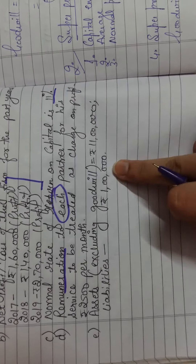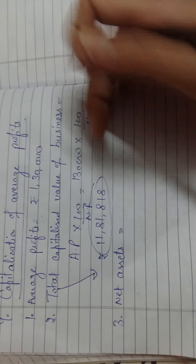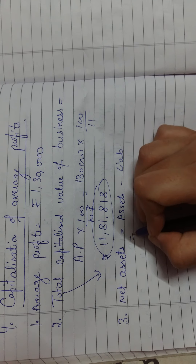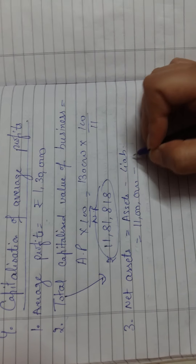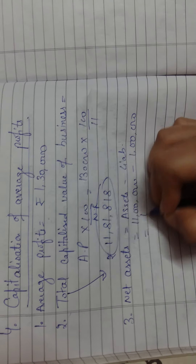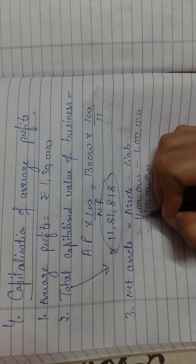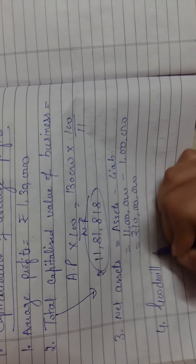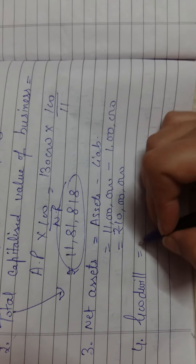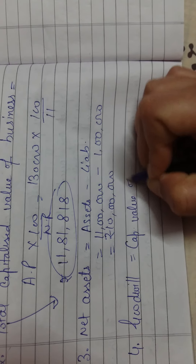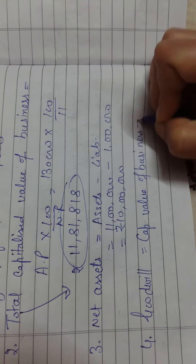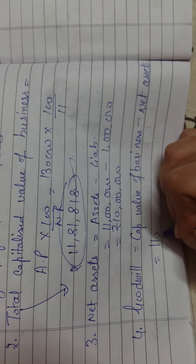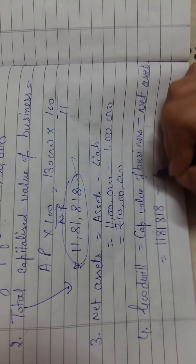Step three: calculate net assets. Net assets equal total assets minus liabilities. Assets are eleven lakh and liabilities are one lakh, so net assets are ten lakh. Step four: calculate the value of goodwill. Goodwill equals capitalized value of business minus net assets — eleven lakh eighty-one thousand eight hundred eighteen minus ten lakh.